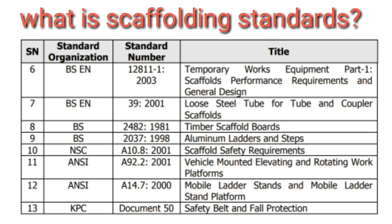2003 Temporary Works Equipment Part 1: Scaffolds Performance Requirements and General Design. 7. BSN 39:2001 Loose Steel Tube for Tube and Coupler Scaffolds. 8. BS2482:1981 Timber Scaffold Boards. 9. BS2037:1998 Aluminum Ladders and Steps. 10. NSCA 10.8:2001 Scaffold Safety Requirements. 11. NSCA 92.2:2001 Vehicle Mounted Elevating and Rotating Work Platforms. 12. NSCA 14.7:2000 Mobile Ladder Stands and Mobile Ladder Stand Platforms. 13. KPC Document 50 Safety Belt and Fall Protection.